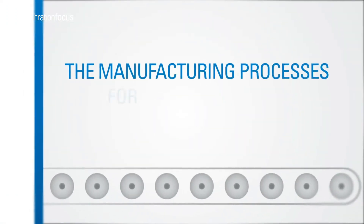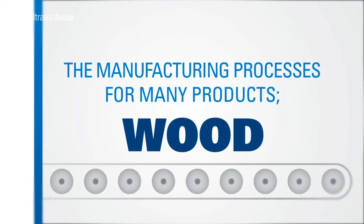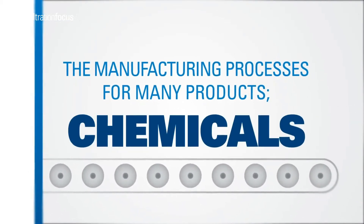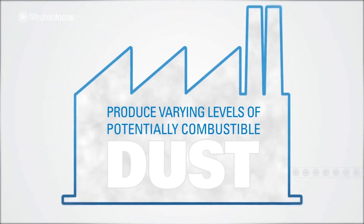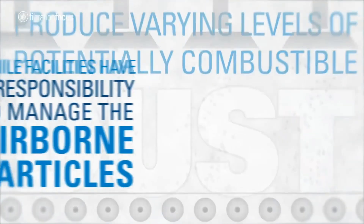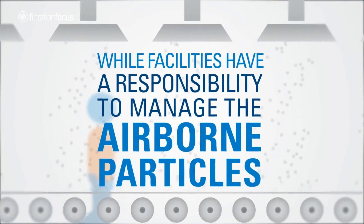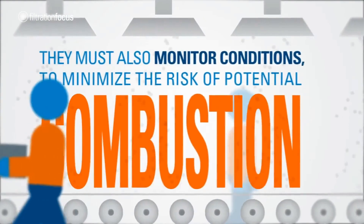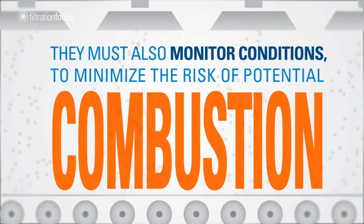The manufacturing processes for many products such as wood, metal, food and chemicals produce varying levels of potentially combustible dust. While facilities have a responsibility to manage the airborne particles, they must also monitor conditions to minimize the risk of potential combustion.